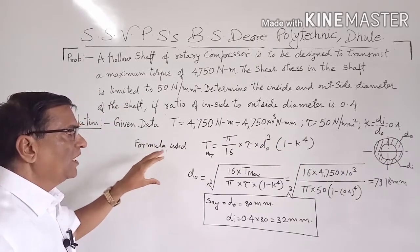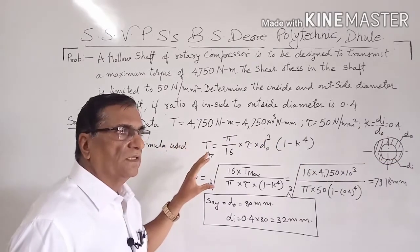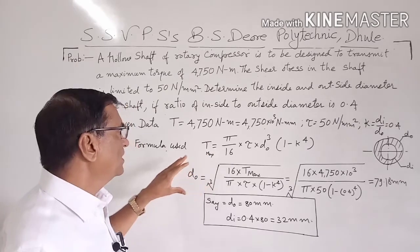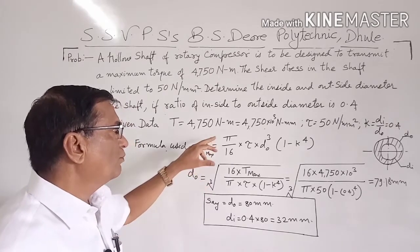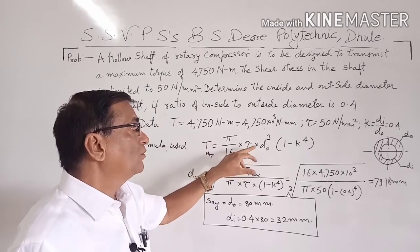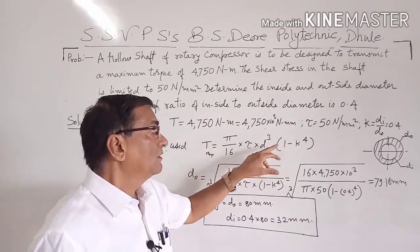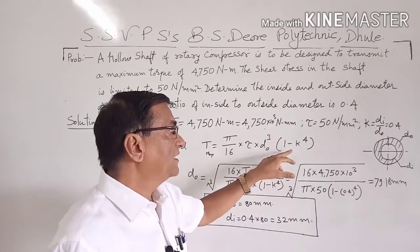Now, the formula used. The formula for hollow shaft subjected to pure torsion is given by T maximum equals pi by 16 times tau times D₀ cubed in the bracket 1 minus K raised to 4.